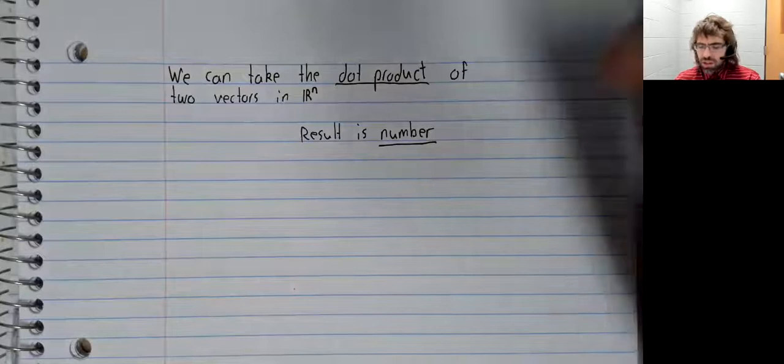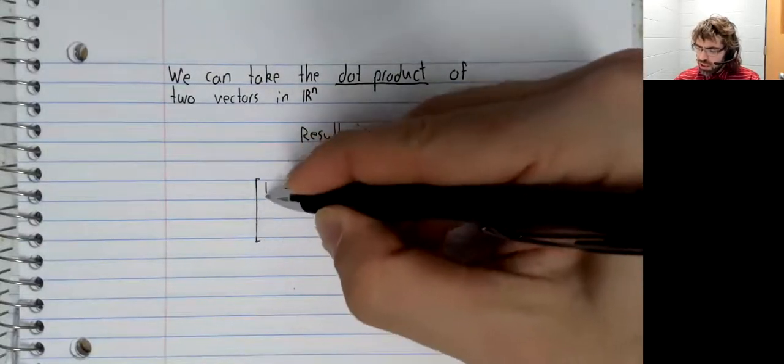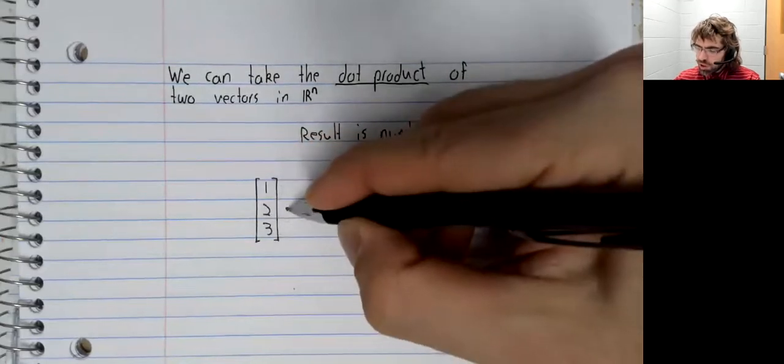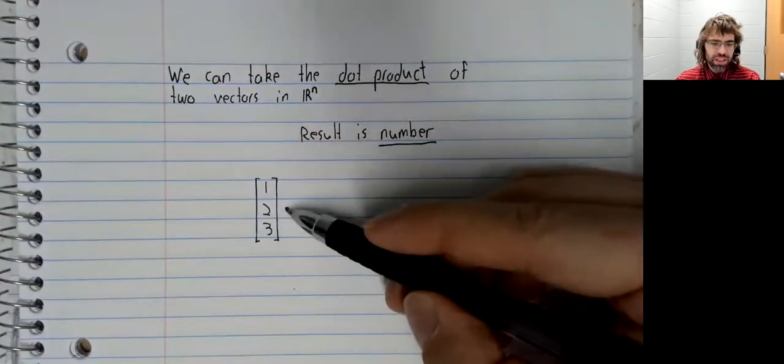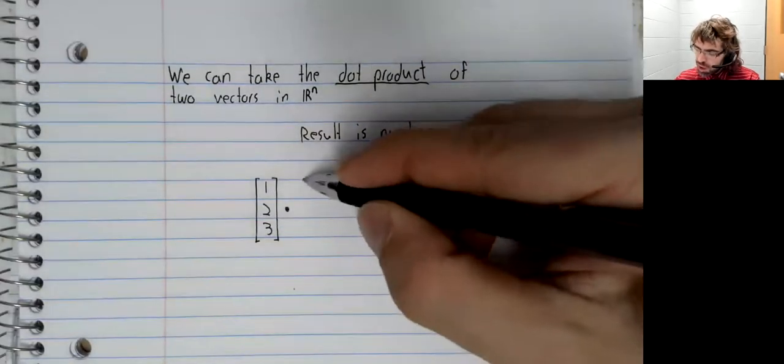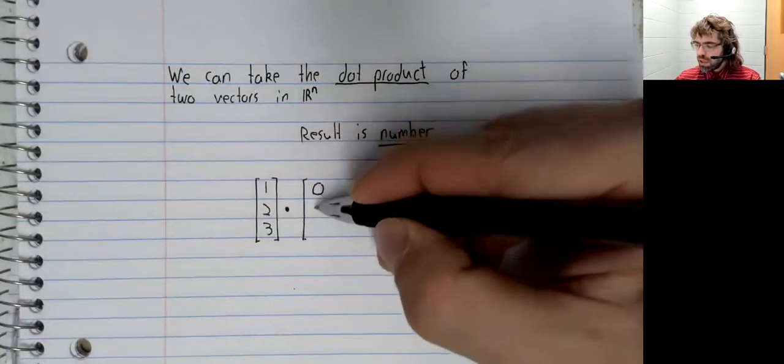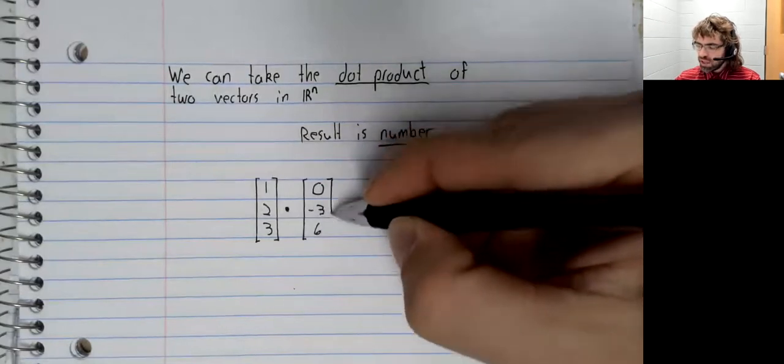Let's illustrate the dot product via example. Let's take the dot product, which is appropriately written as a dot, of one, two, three, and zero, negative three, six.